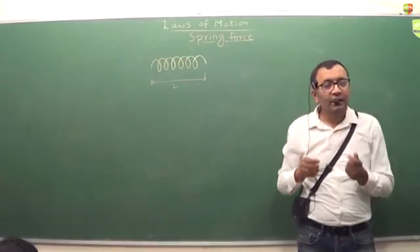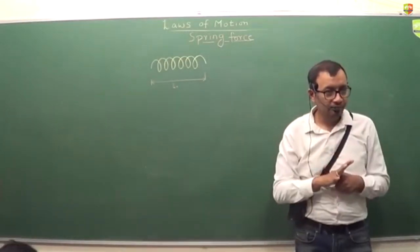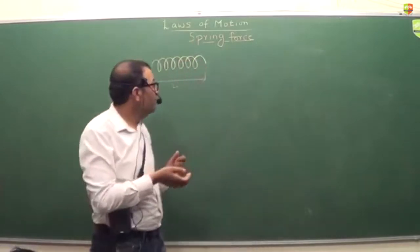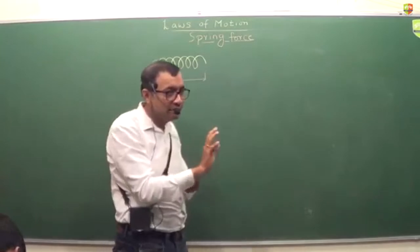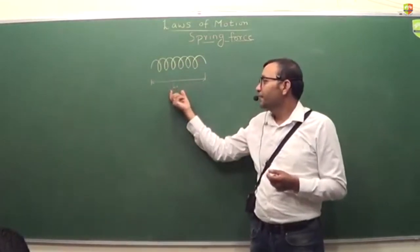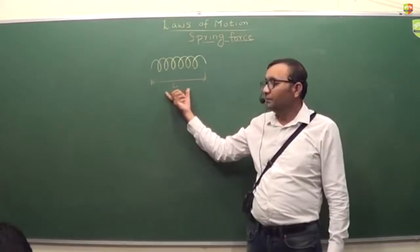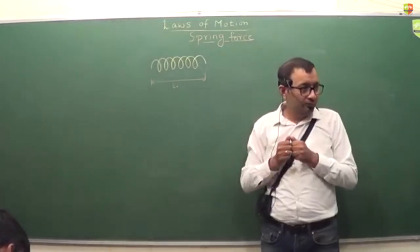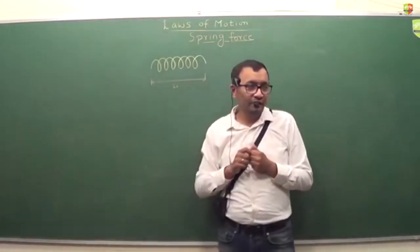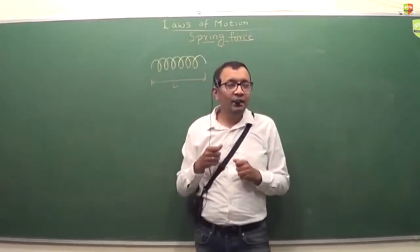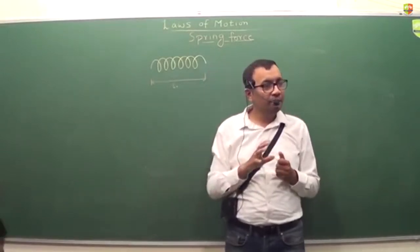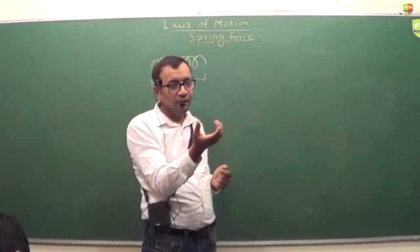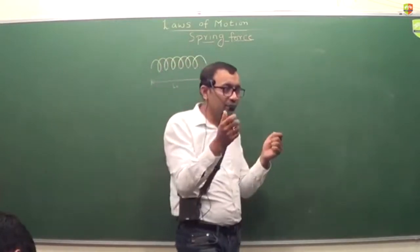The behavior of the spring is such that it tries to regain its original length. So if I change its length, it will try to come back to its original length. If I compress it, it will try to expand — it will push both sides with some force. And if I stretch it, it tries to contract. If it is at its natural length, it will not apply any force. So if you keep a spring on your hand, a small spring, it will not apply any force. But if you compress it, it will try to expand; if you expand it, it will try to compress.